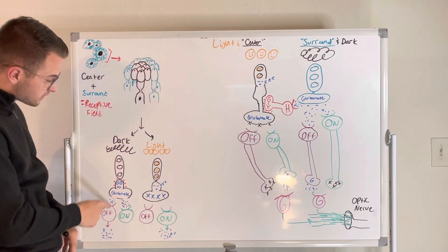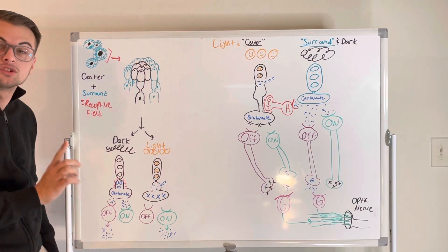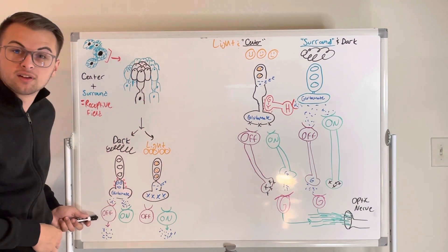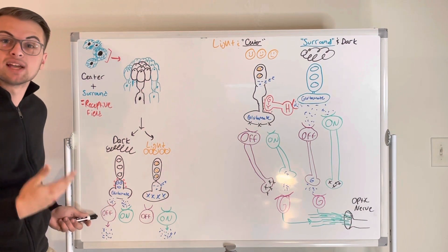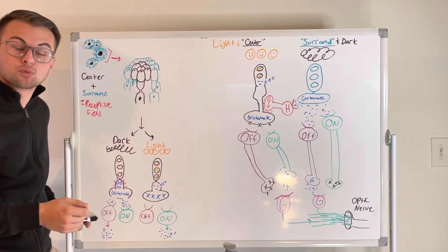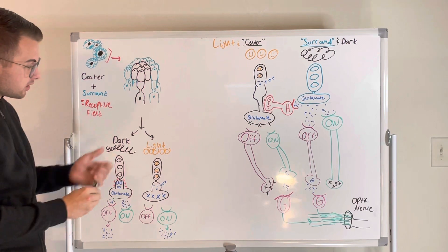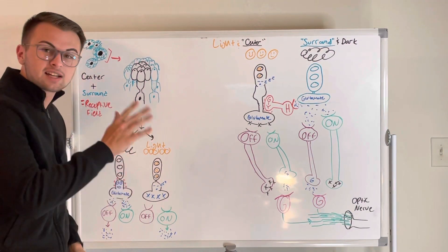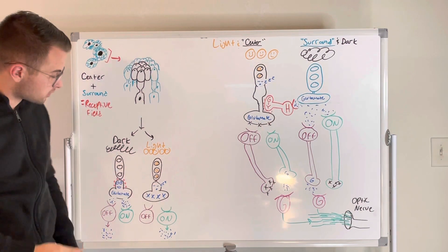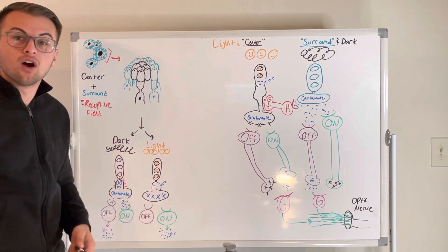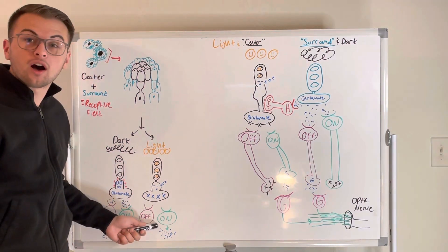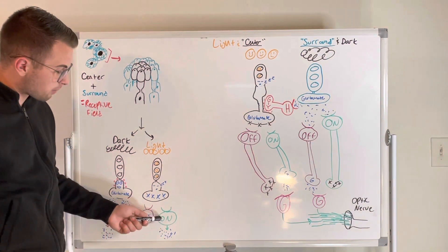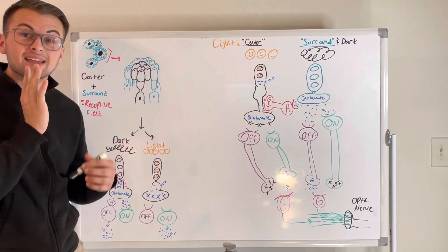The rod photoreceptor in the dark will continue to release glutamate onto our two types of bipolar cells. When glutamate is released onto them, the off-center bipolar cell becomes activated and tells the ganglion cell that this particular rod is in the dark. If we shine light onto this rod, it becomes hyperpolarized and stops releasing glutamate. This absence of glutamate will activate our on-center bipolar cells, which tell the ganglion cell that this particular rod is now in the light.